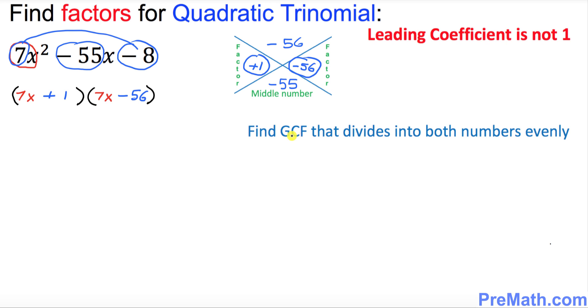Now we must find a GCF, the biggest number that divides into these both numbers at the same time, and obviously that number is 7. So I want you to go ahead and divide 7 on both these numbers, 7 divided by 7 and 56 divided by 7.